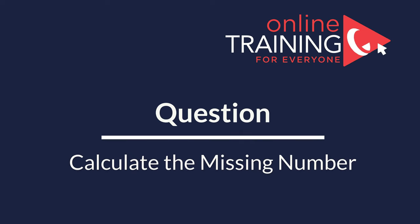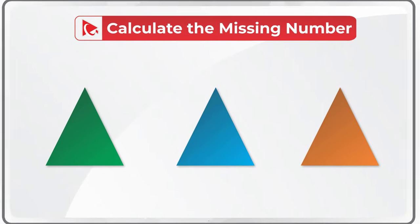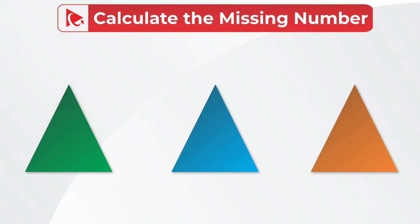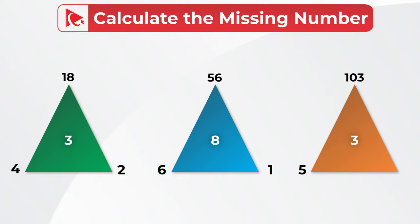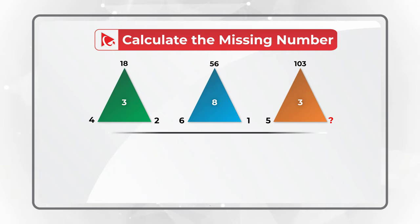Here's a very interesting question to see how quickly and effectively you can solve the challenge. You're presented with three triangles. Each triangle has numbers in the corners as well as a number in the middle. The first triangle has numbers 4, 18, and 2, and the number 3 in the middle. The second triangle has outside numbers 6, 56, and 1, and has 8 in the middle. The third triangle has number 3 in the middle and numbers 5 and 103 on the outside. In the upper right corner of the third triangle, you have a missing number, which you need to calculate out of four different choices.